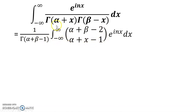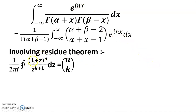We first found 1 over [gamma(alpha plus x) times gamma(beta minus x)], and put that value into the given integration. The e to the power inx is multiplied in, involving the residue theorem. The formula used is: 1 over 2 pi i times closed integral of (1 plus z)^n over z^(k+1) dz equals C(n, k). I have used this formula in many examples and will provide a link.